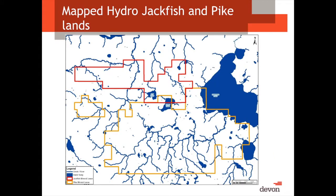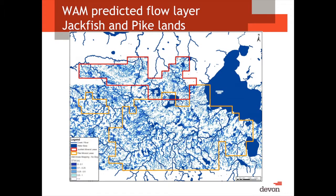Like all the other slides showing existing hydrology, this is our Jackfish and Pike mineral lands. When we're talking oil and gas, it's different than an FMA. The red area represents lands that we had 100%, and the yellow is areas we're evaluating to determine what's out there for potential resource. The existing hydrology was very obvious — a couple of small rivers, lots of lakes, lots of wetlands, lots of streams. When you compare that to the predicted flow layer using wet area mapping, it has a very significant impact on the landscape for your planning purposes.